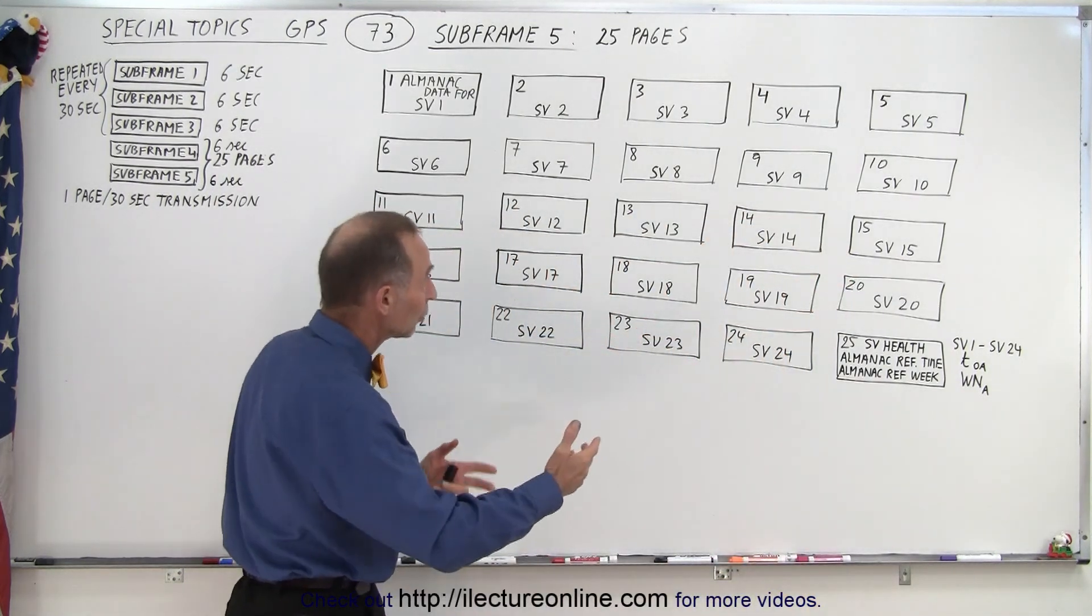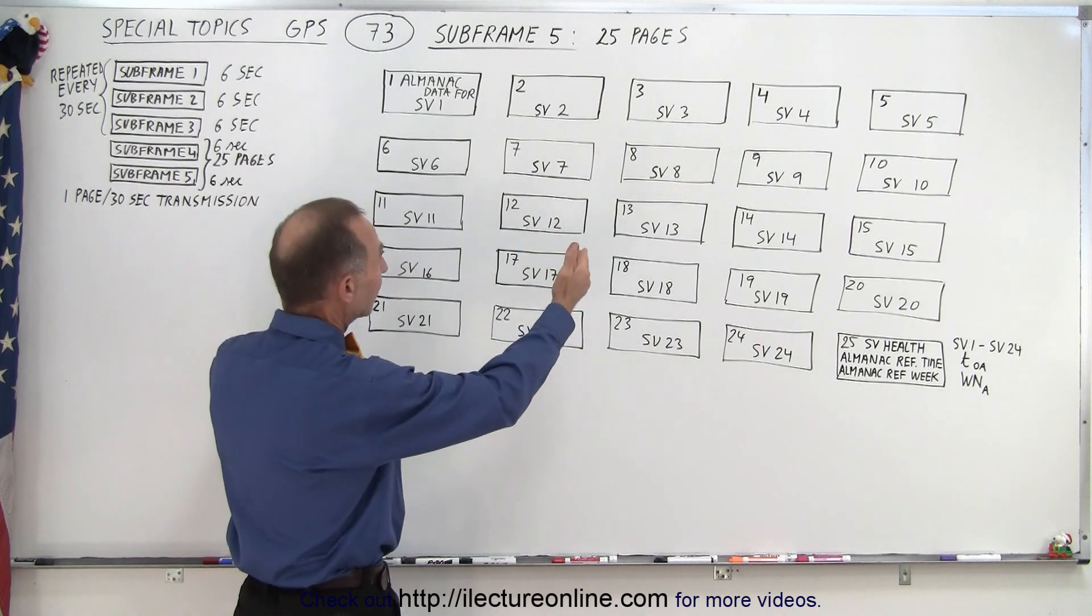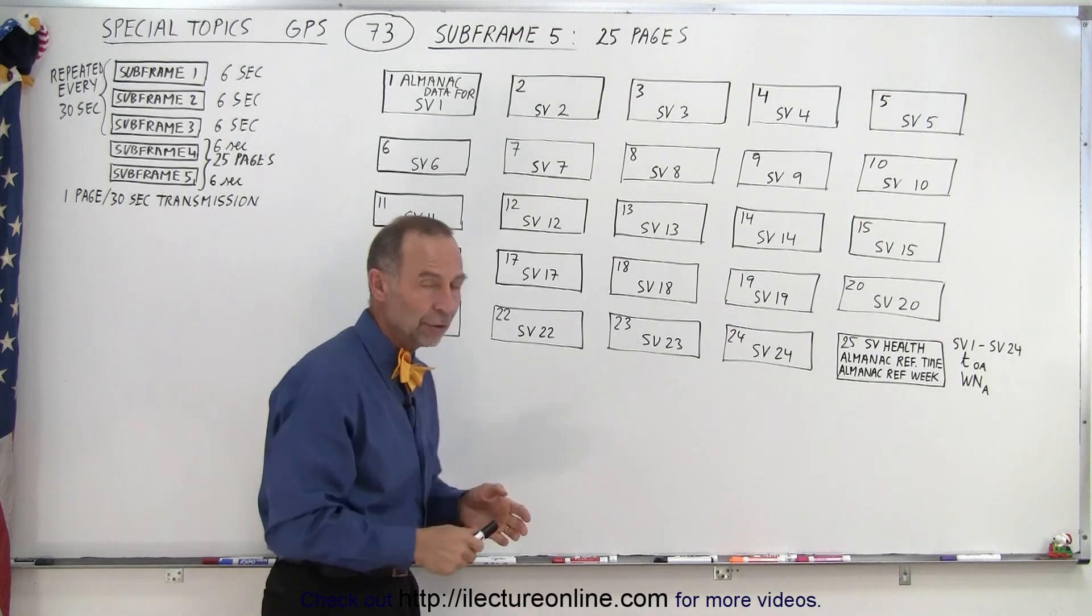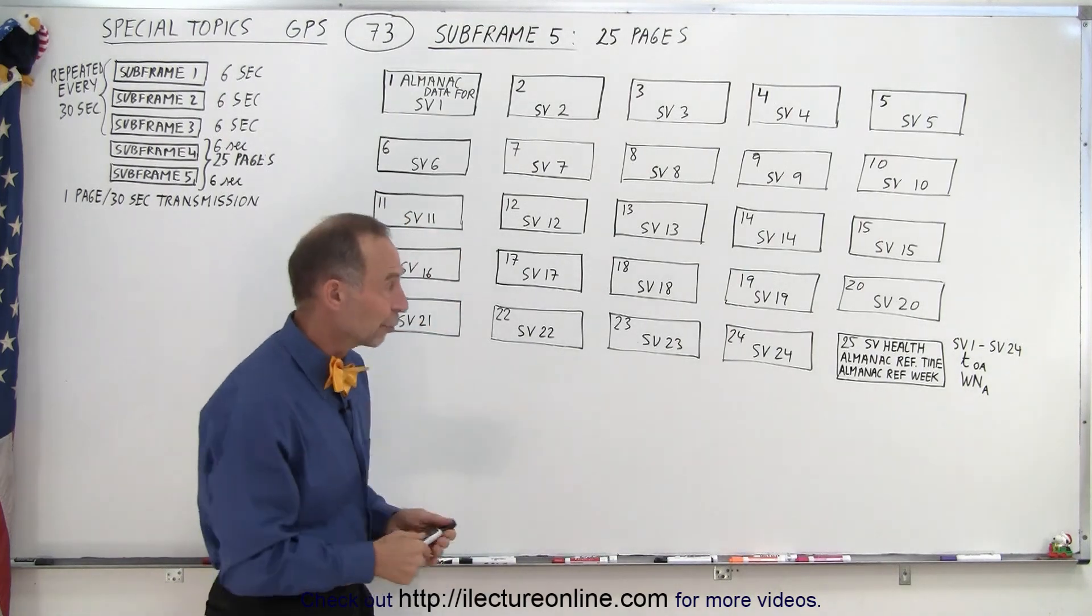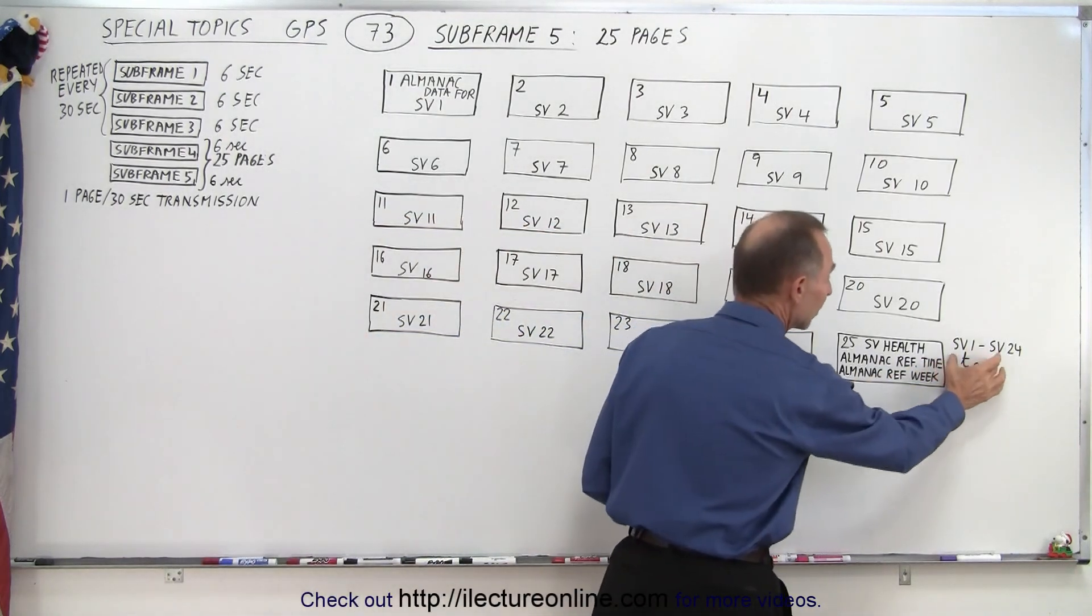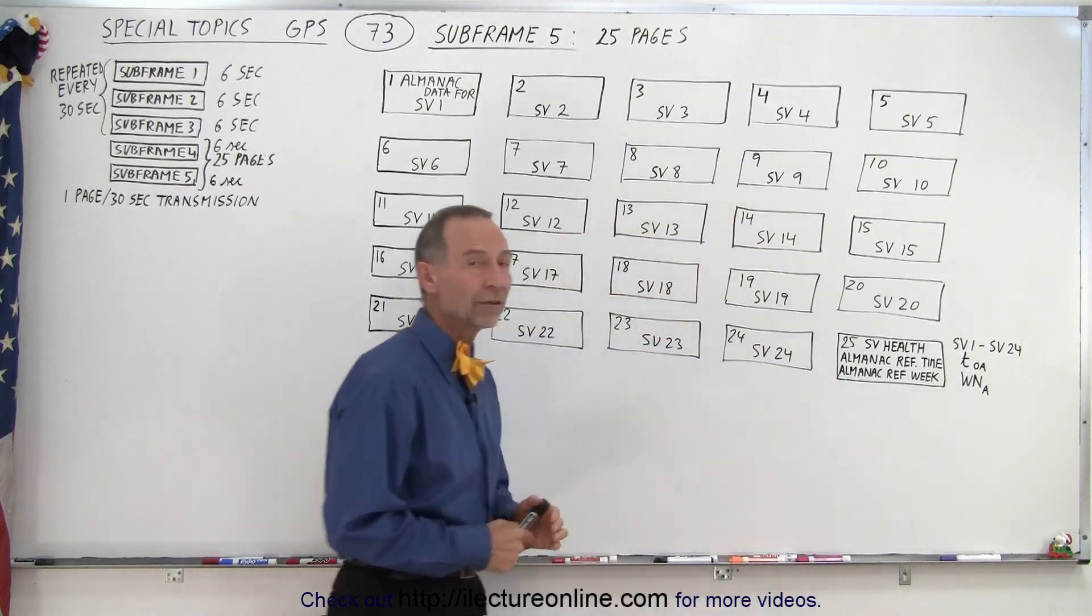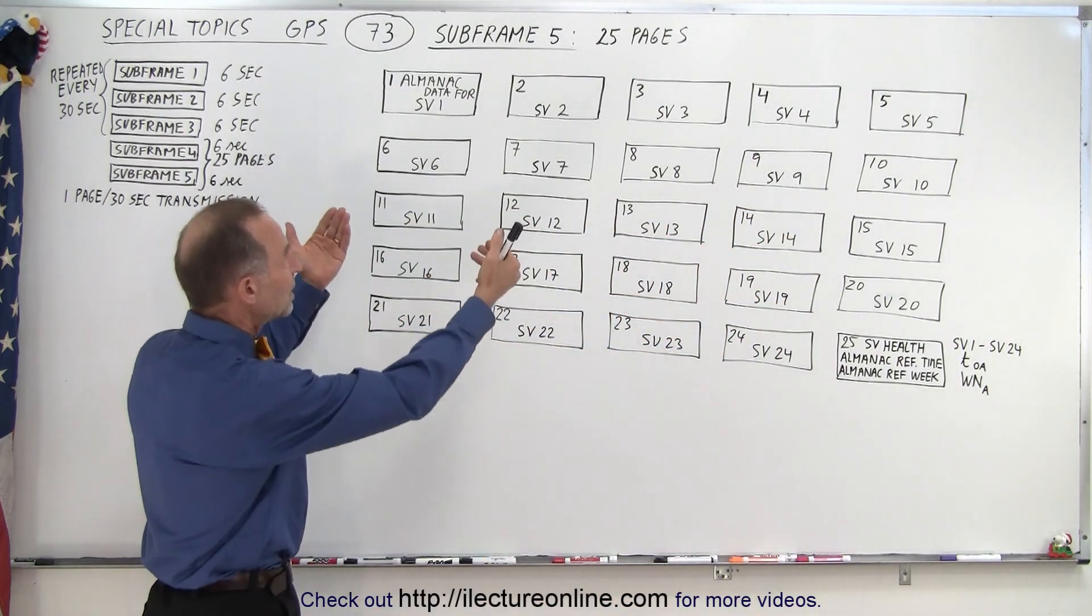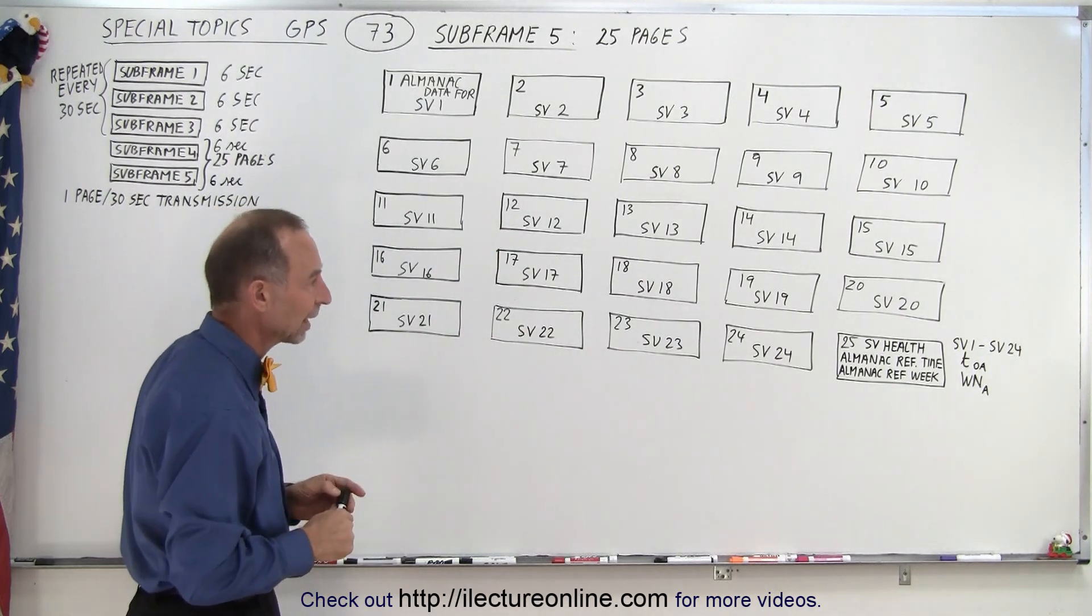We want to be able to associate the almanac data that we get transmitted down from the satellites to a particular time in the year, to a particular week. And then of course, the time within that week is indicated by the TOA. So we want to know exactly what time is associated with these almanac data transmissions from the satellite.